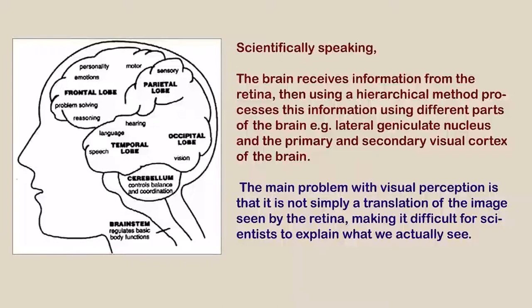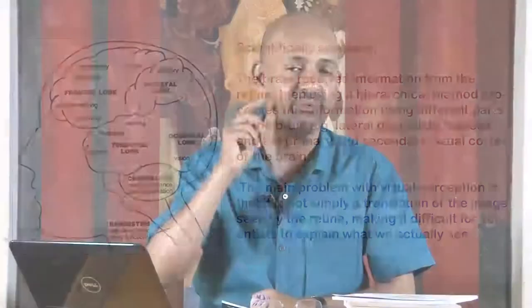Scientifically, our brain receives information from the retina and processes it using different parts of the brain — the lateral geniculate nucleus and the primary and secondary visual cortex. The main problem is that visual perception is not simply a translation of the retinal image, making it difficult for scientists to explain what we actually see. It is not just a retinal process; it is an intellectual, mental, psychological, and cultural process.